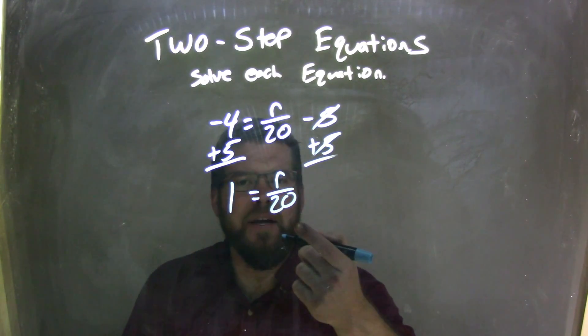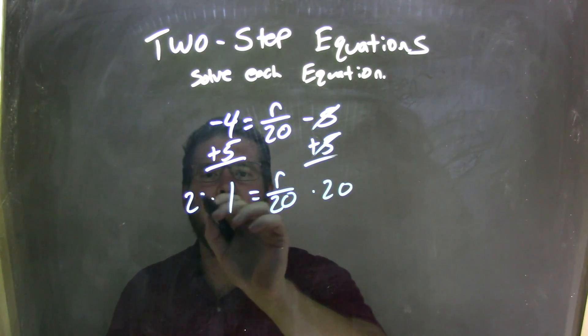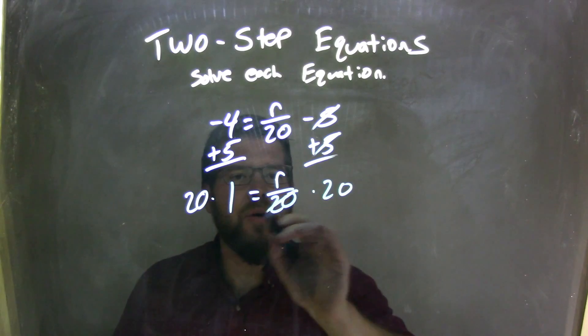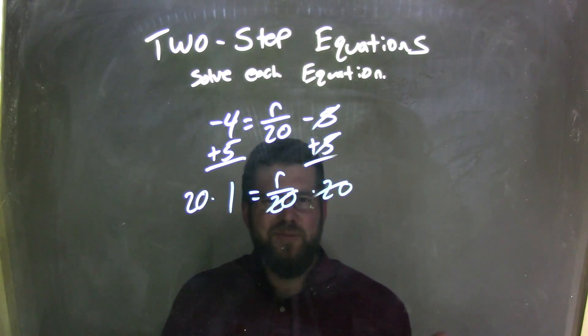Well, I'm dividing by 20, so the opposite of division is multiplication. I'm multiplying by 20 to both sides. By doing so, it cancels out the 20s here on the right, and now I have 20 times 1. 20 times 1 is easy, it's 20.